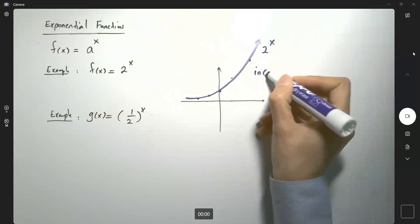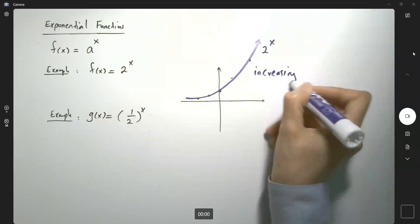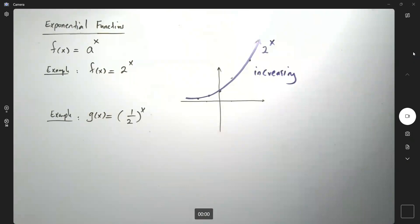2^x is an increasing function on its domain. What if I change it to a half? Remember, a half is a number between 0 and 1. This is a small number. So let's graph this guy.